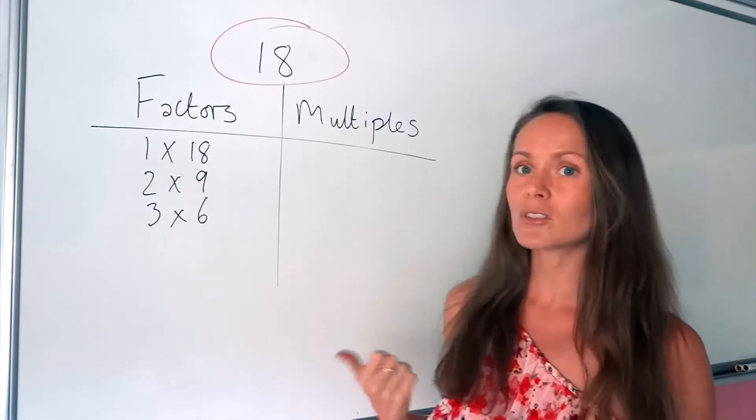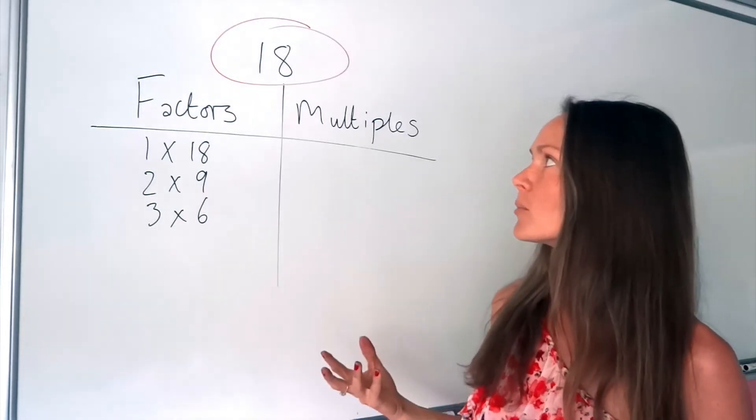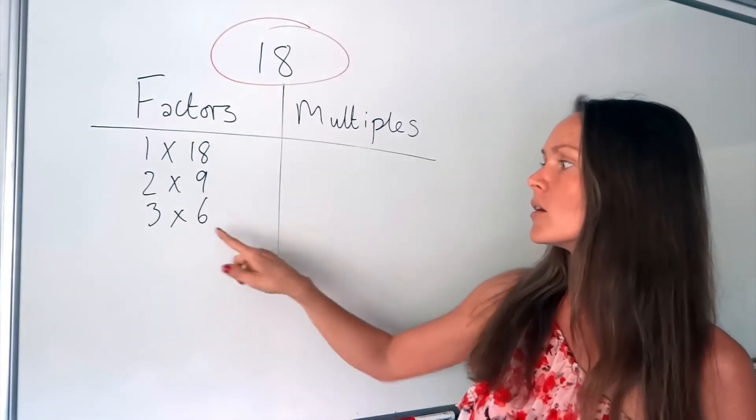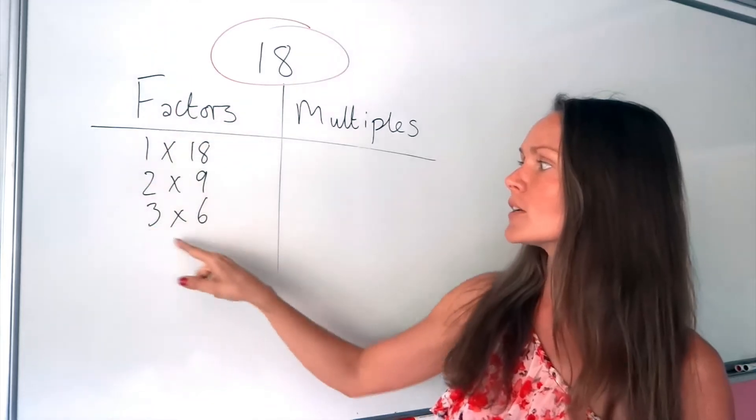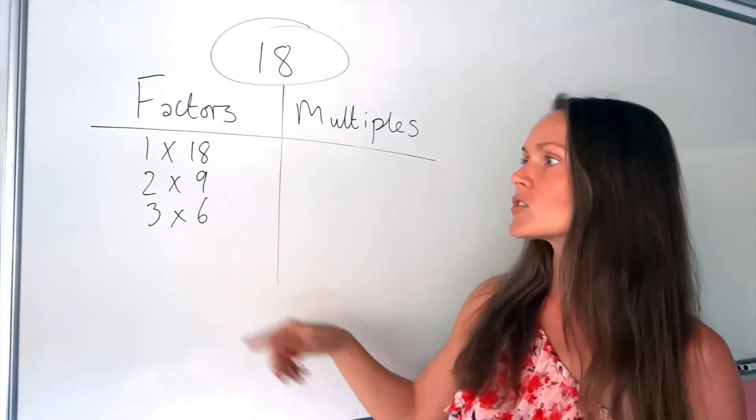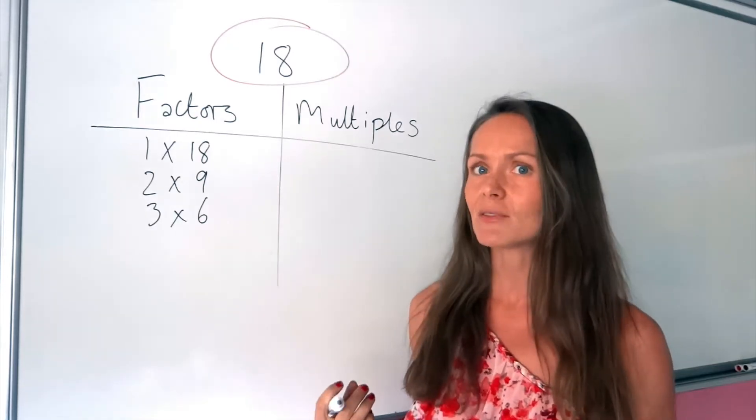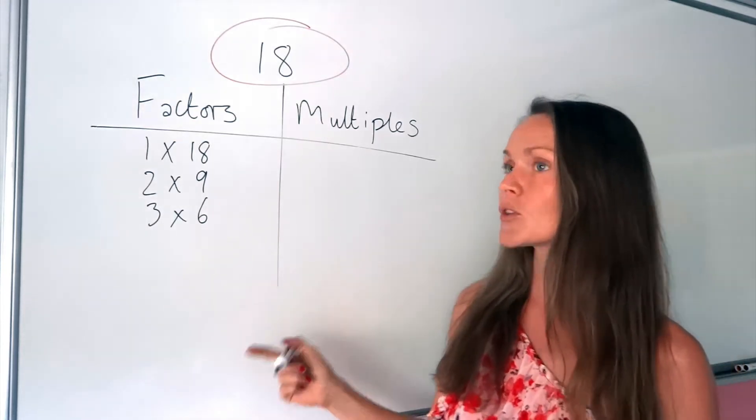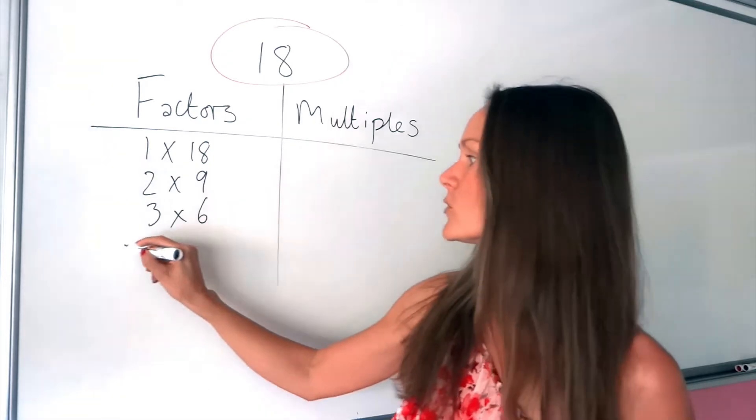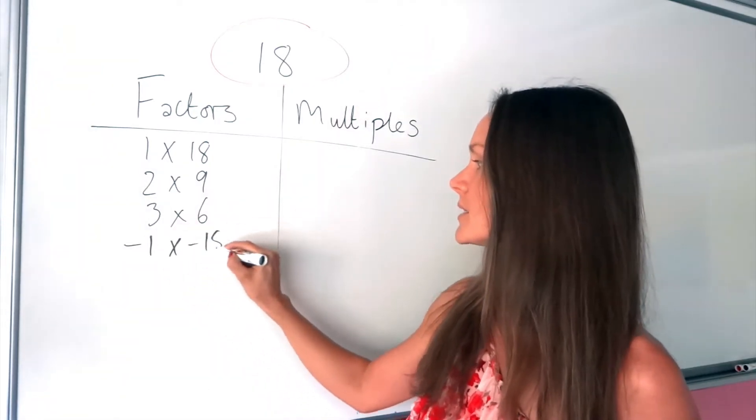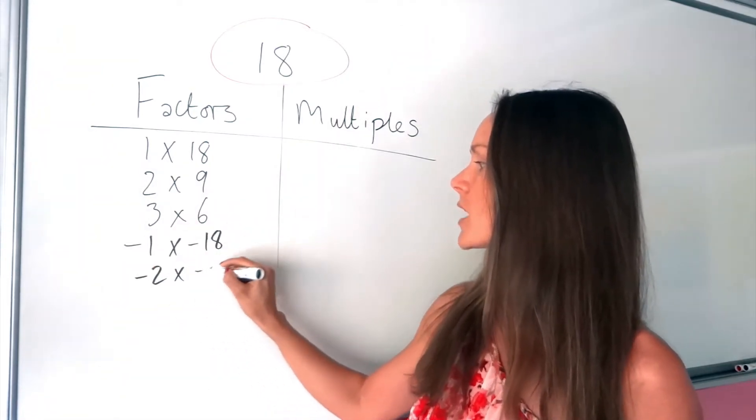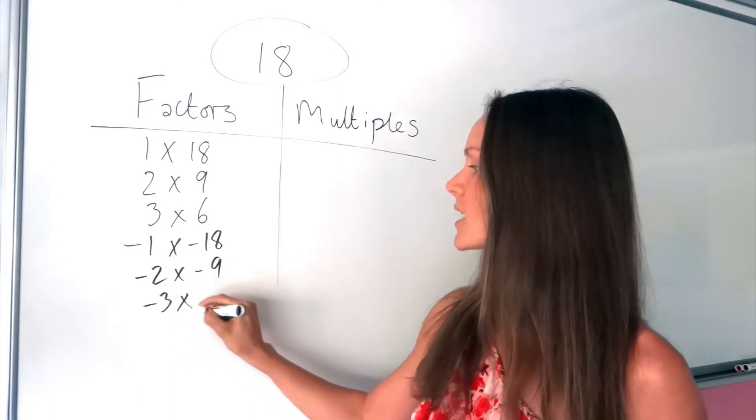Well, the number 4 doesn't go into 18. Neither does the number 5. 6, we've already done. So I know I've included all of the factors there. So really, you've just got to practice your times tables to get good at finding these factors. Don't forget, you've also got the negative ones. We've also got negative 1 times negative 18, negative 2 times negative 9, and negative 3 times negative 6.